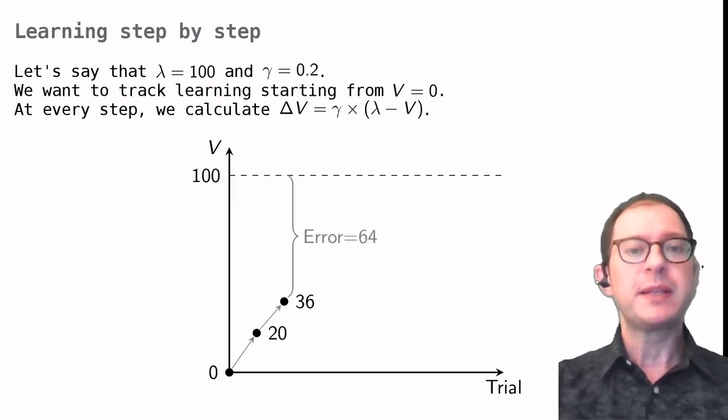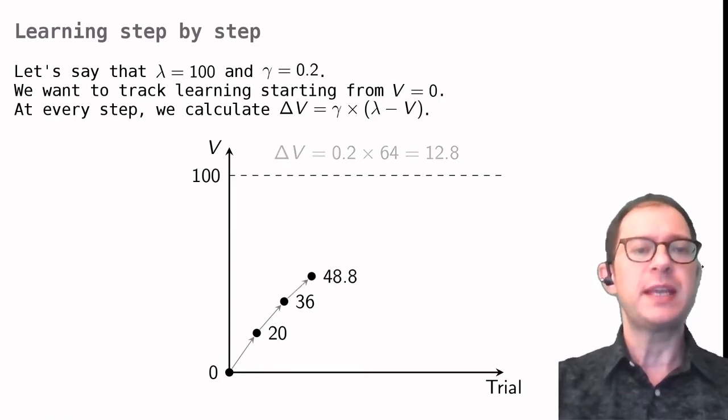We can repeat this another time. When we are at 36, the error is 64, which means that according to the model, the associative strength is going to increase another 12.8 units, for a total of 48.8.